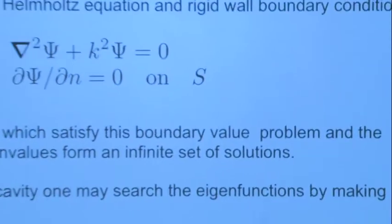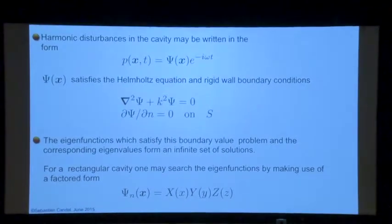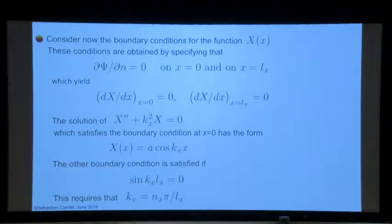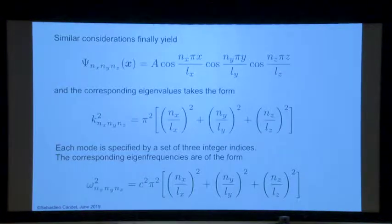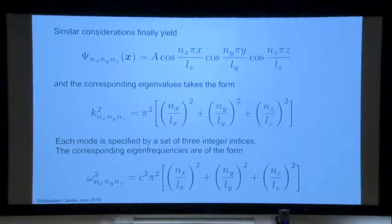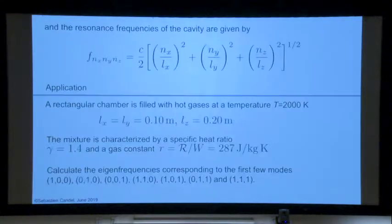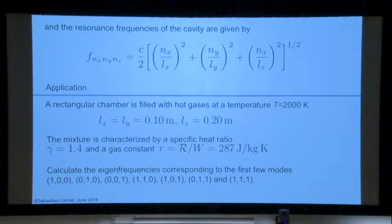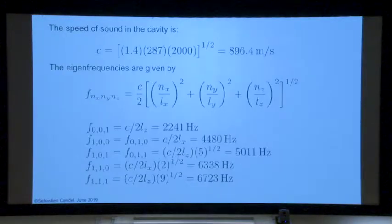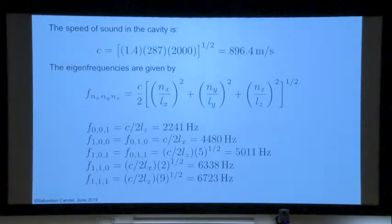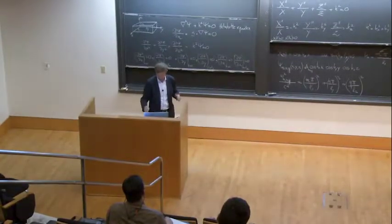That was what we did yesterday, so it's just coming back to that. You can calculate all these modes. For example, take a small box filled with air at a temperature of 2000 K because it's combustion. Then you look at the frequencies and you can find 2000 Hz, 4000, 5000, 6000, 6700, and so on. So you can get a precise value of all these frequencies and you have the mode shapes as well.